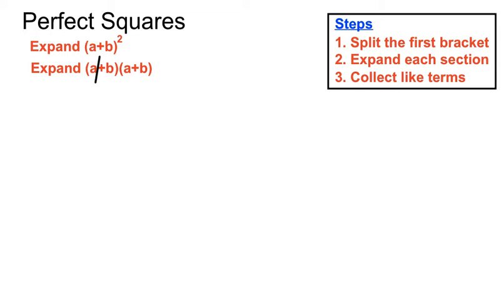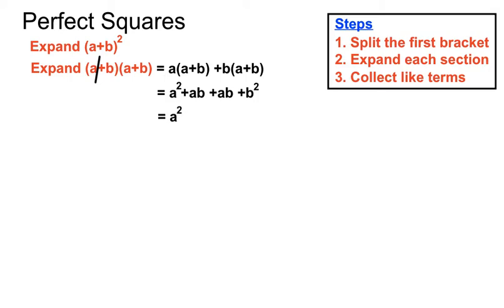We can make a general rule out of this, but let's have a look at examples. If we split that up and had a outside of the second bracket and b outside of the second bracket, like we'd normally expand binomial products, we end up with a times a, a times b, b times a which is ab, and b times b which makes b squared. Those ab terms are like terms and we can join them up.